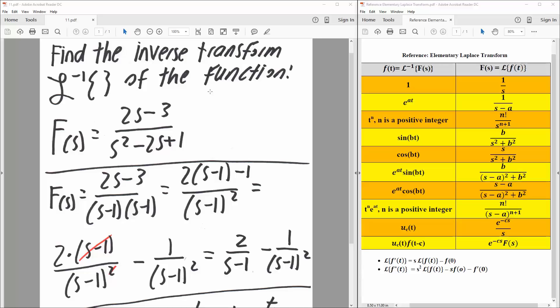In this video, we want to find the inverse transform of the function f(s) equals 2s minus 3 divided by s squared minus 2s plus 1. Let's get started.